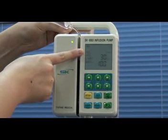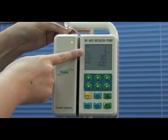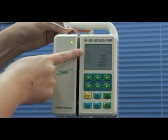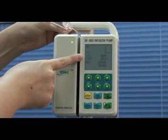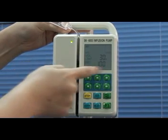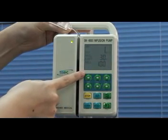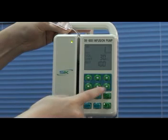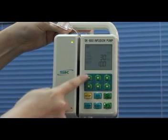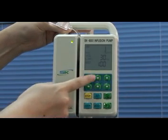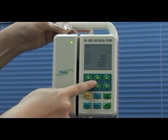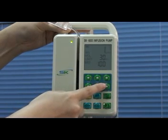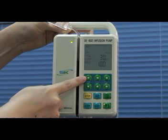Now we need to adjust the flow rate into 250 ml per hour. The volume limit to be 10 ml. How to adjust the parameters? We adjust them through number keys. Here you can see there are up and down 100 keys, up and down 10 keys, up and down 1 key.